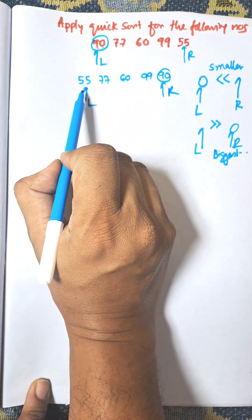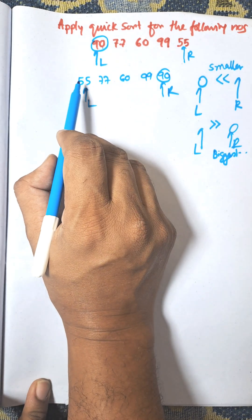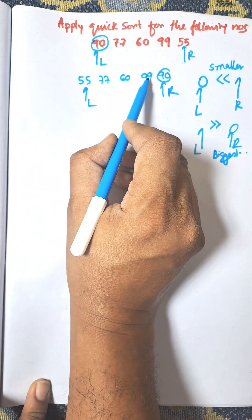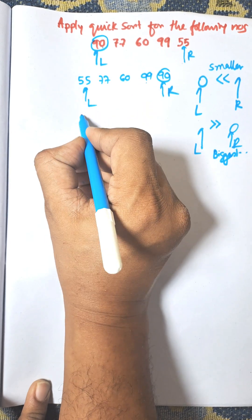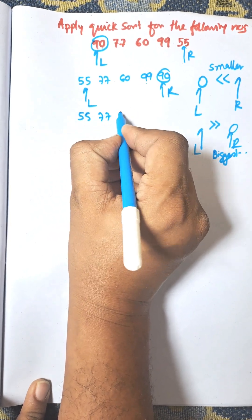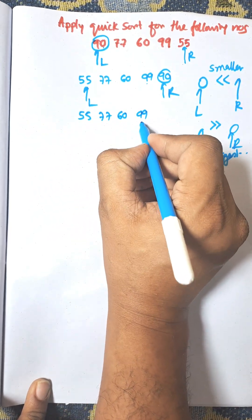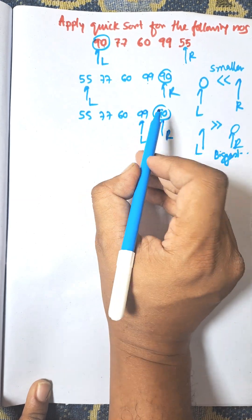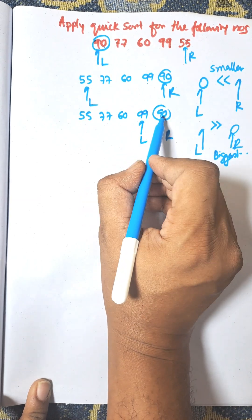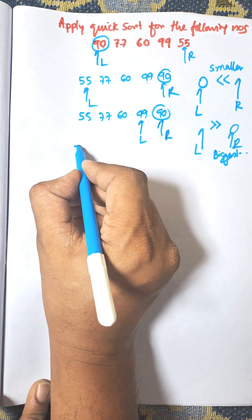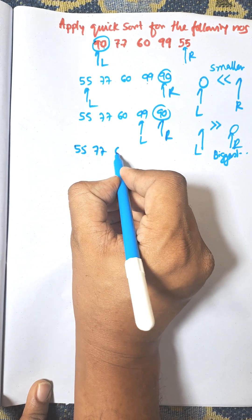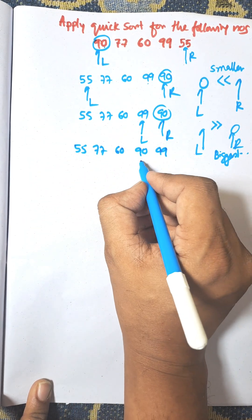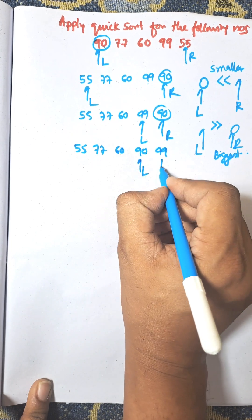Now we search from left to right for the largest element greater than the pivot 90. The first such element is 99. With L at 55, 77, 60 and R at 99 — since 99 is greater than 90, they are swapped, giving: 55, 77, 60, 90, 99. L is now at the leftmost position and R at the rightmost.